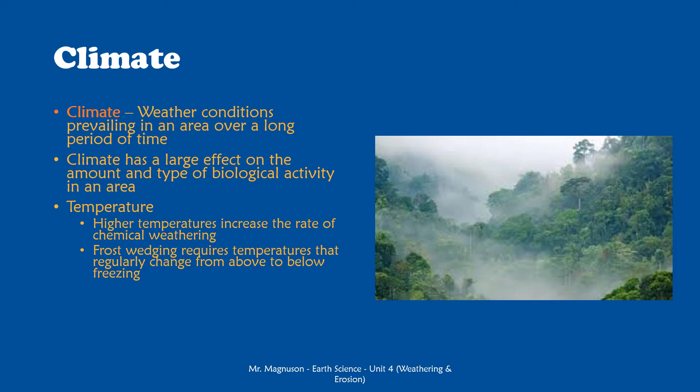Temperature on its own has a large effect on weathering. High temperature increases the rate of chemical weathering — the warmer it is, the quicker those chemical reactions can occur. Frost wedging requires the temperature to regularly change from below freezing to above freezing and back again. We need the ice to freeze, melt, and freeze again to break apart rocks via frost wedging. So if you don't have the right temperatures, your climate isn't going to produce frost wedging.